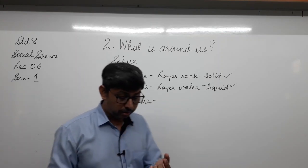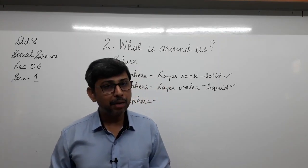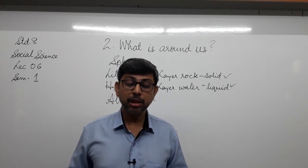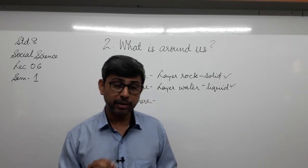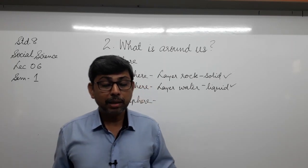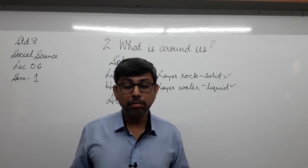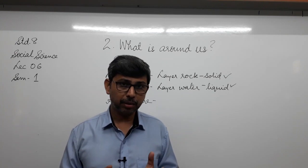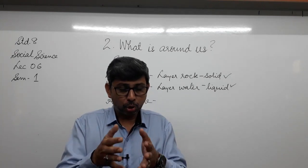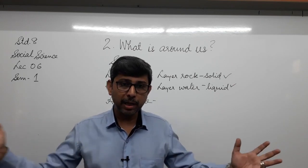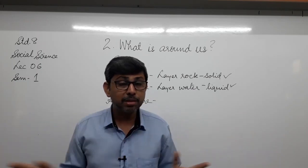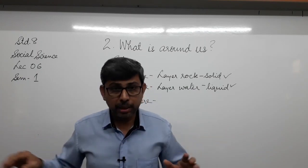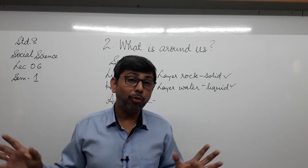Let us go and read from the content on page number 14. Have a careful look and read the important things marked there — try to remember those points because they are very important. The sphere of air that wraps the earth from all sides is called atmosphere. When I swish my hands around, I can feel the air — all that surrounds me can be called a blanket of atmosphere.